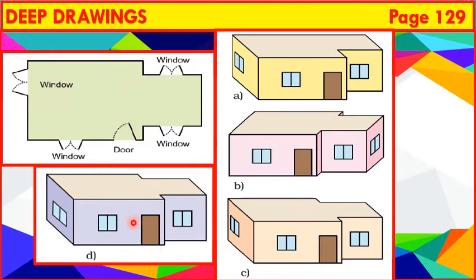Drawing A shows a straight back wall. So, it does not match the floor map. Drawing B shows a window on the right side. So, it also does not match the floor map.